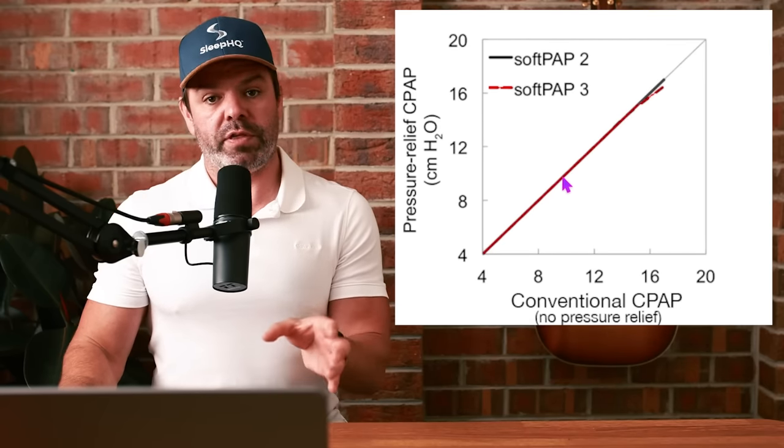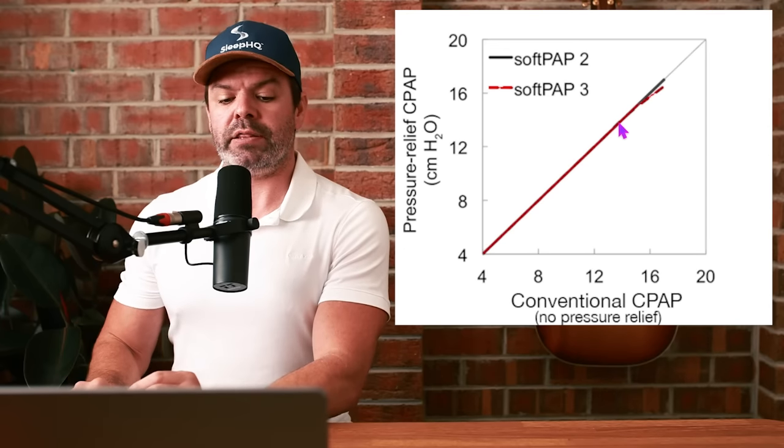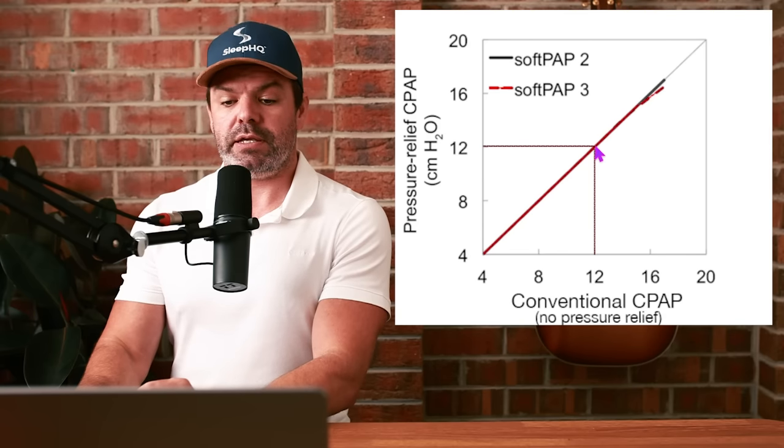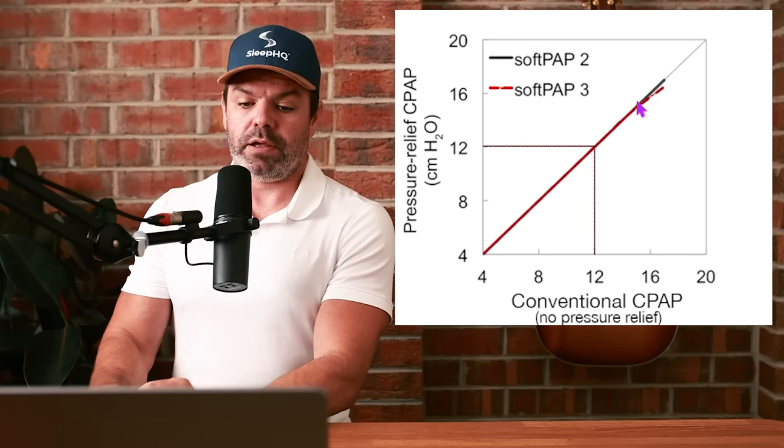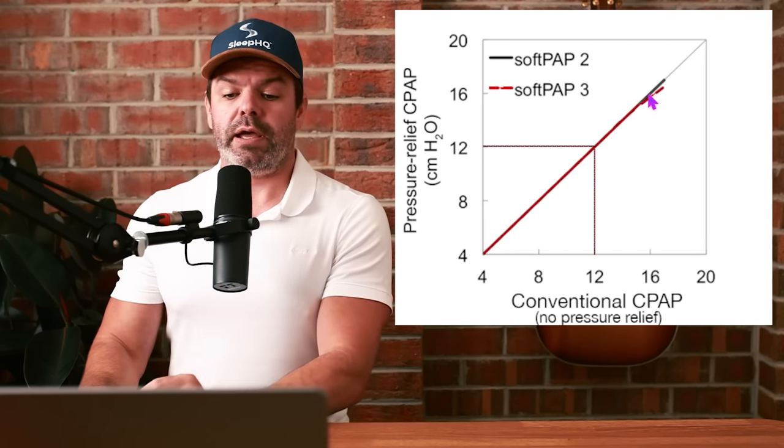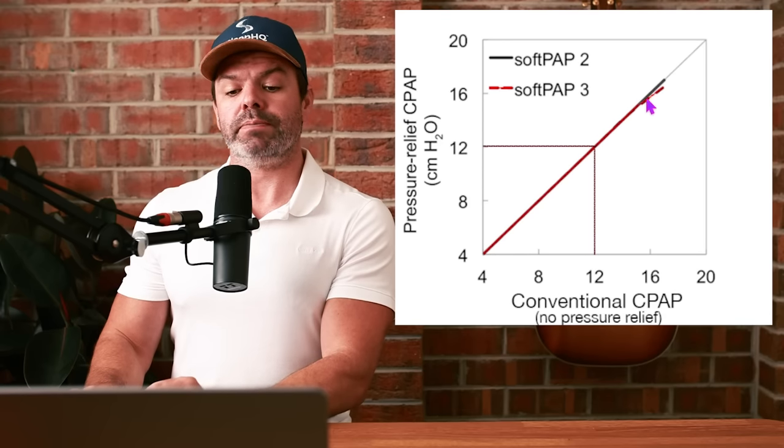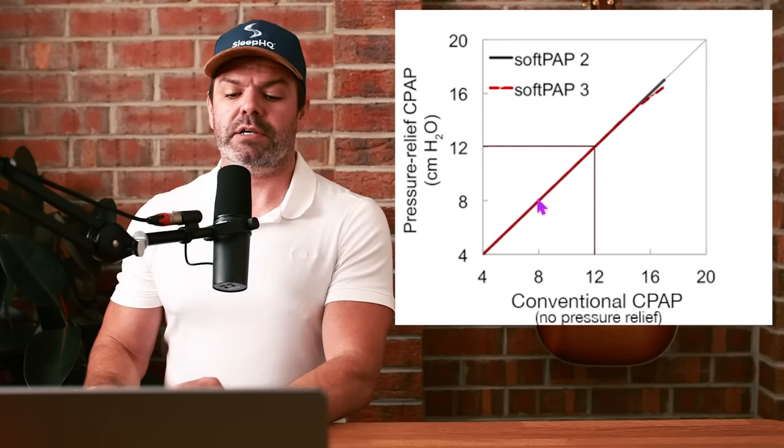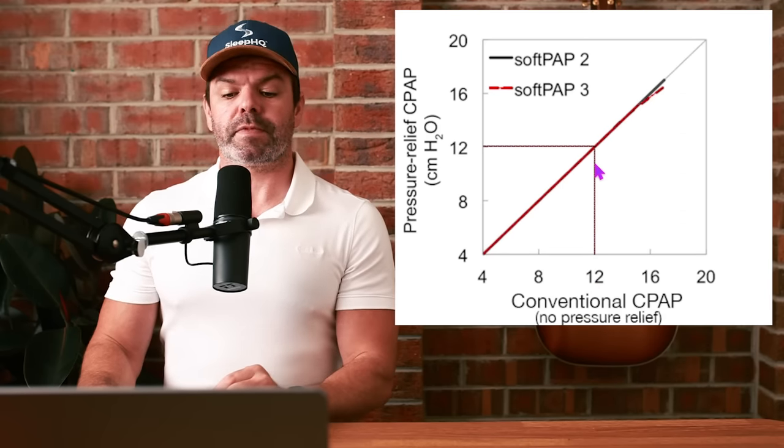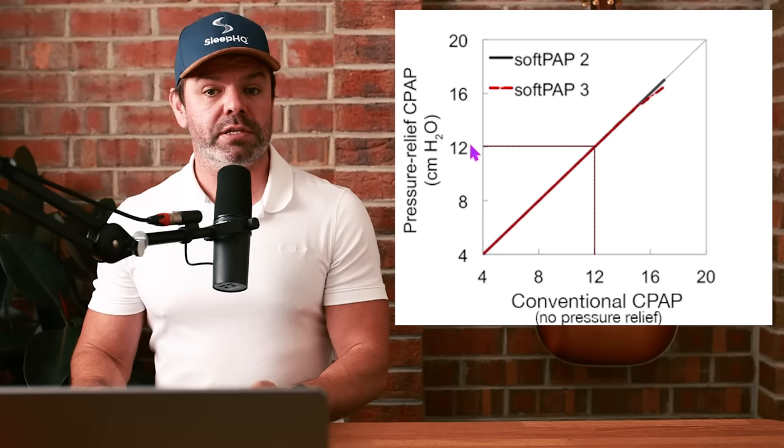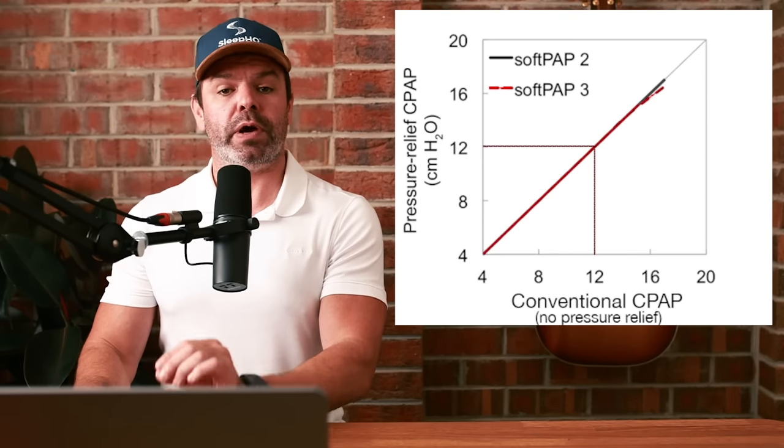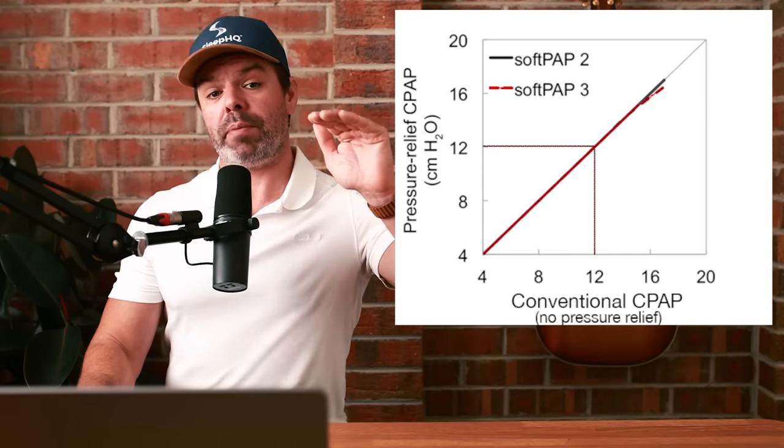to that with SoftPAP on two and three. Here's 12, you can see the lines here. This little gray line runs right from here to here. This is the conventional CPAP pressure required, and then we've got the black line and the red dotted line. The lines are very, very close together. So 12 centimeters with conventional CPAP no pressure relief is the same as 12 centimeters with pressure relief. You can have your cake and eat it too. You can have SoftPAP on two and three and you don't have to adjust that CPAP pressure higher.